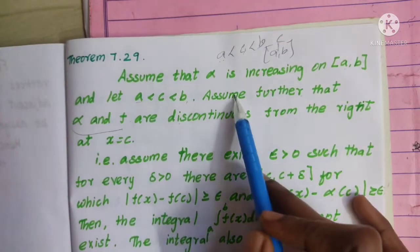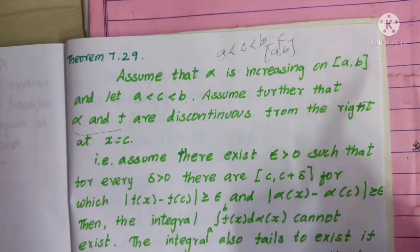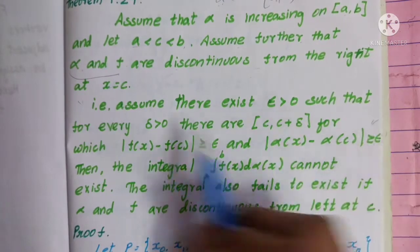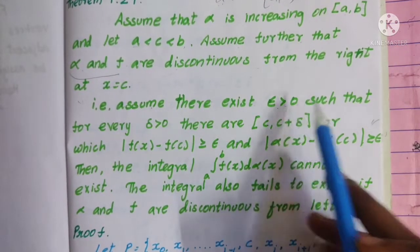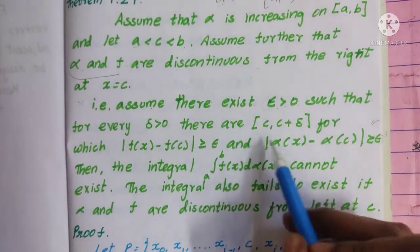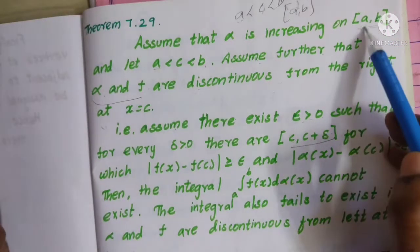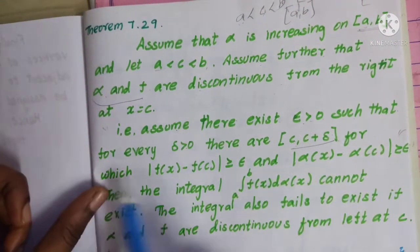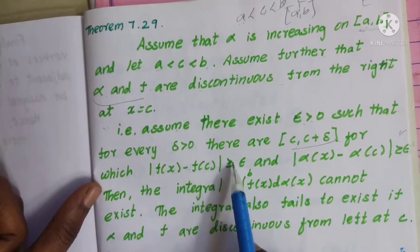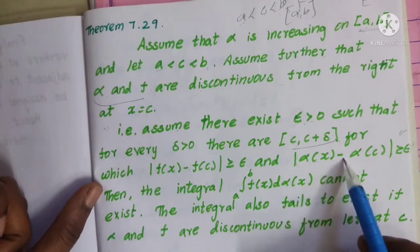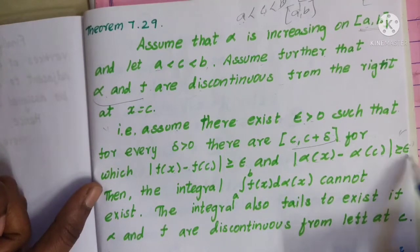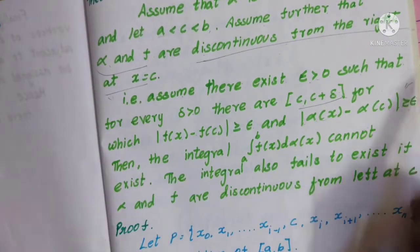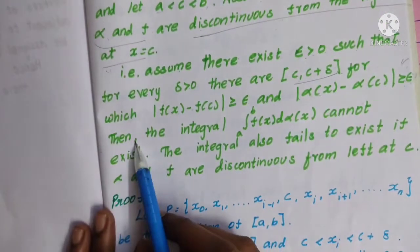We will show this as a result. Since alpha and f are discontinuous from the right at c, we start with the condition: assume there exists epsilon greater than zero such that for every delta greater than zero, there are closed intervals [c, c+delta] for which |f(x) - f(c)| > epsilon and |alpha(x) - alpha(c)| >= epsilon.